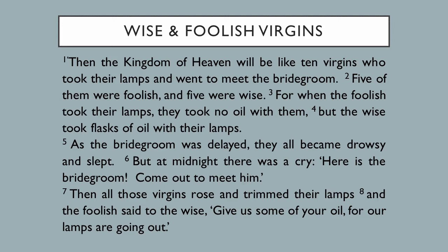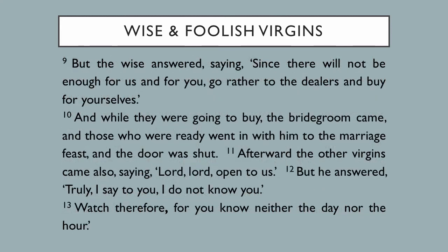Reading Matthew 25 from verse 1. Then the kingdom of heaven will be like ten virgins who took their lamps and went to meet the bridegroom. Five of them were foolish, and five were wise. For when the foolish took their lamps, they took no oil with them. But the wise took flasks of oil with their lamps. As the bridegroom was delayed, they all became drowsy and slept. But at midnight there was a cry, Here is the bridegroom, come out to meet him. Then all those virgins rose and trimmed their lamps. And the foolish said to the wise, Give us some of your oil, for our lamps are going out. But the wise answered, saying, Since there will not be enough for us and for you, go rather to the dealers and buy for yourselves. And while they were going to buy, the bridegroom came. And those who were ready went in with him to the marriage feast, and the door was shut. Afterward the other virgins came also, saying, Lord, Lord, open to us. But he answered, Truly I say to you, I do not know you. Watch therefore, for you know neither the day nor the hour.